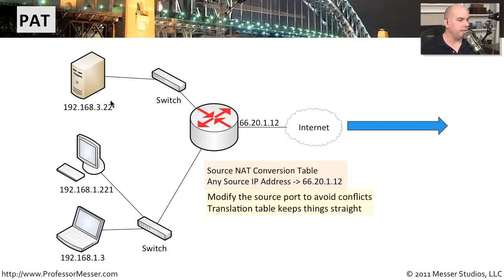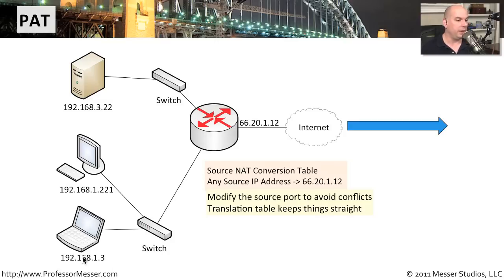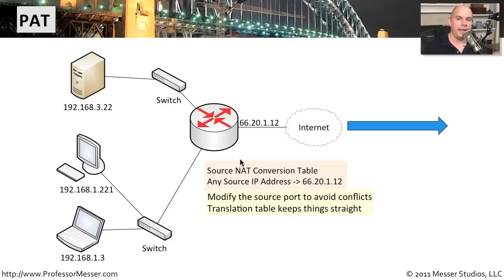Here's a good example why. Let's say we have three devices on our internal network — 192.168.3.22, 192.168.1.2.21, and 1.3 — and they all need to communicate with Google right now. All three devices are going to send packets out to the internet, and our internet router or firewall is going to perform network address translation, modifying all of these IP addresses so that the outbound message is sourced from 66.20.1.12.